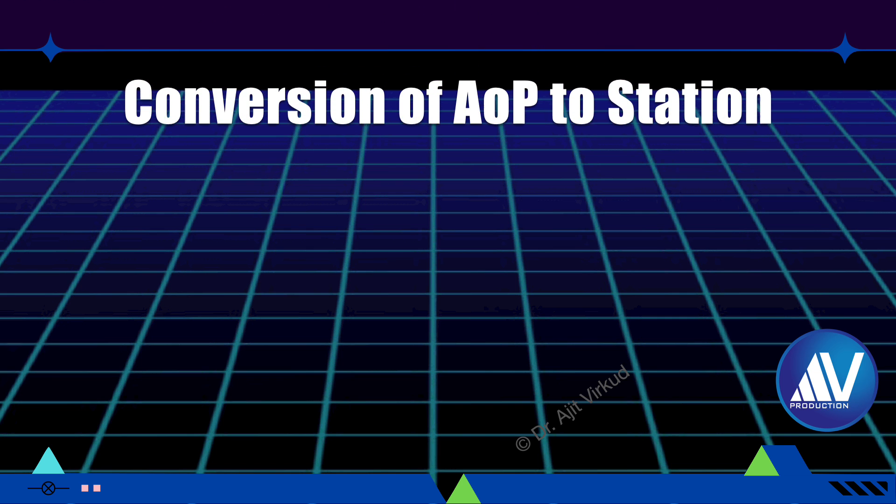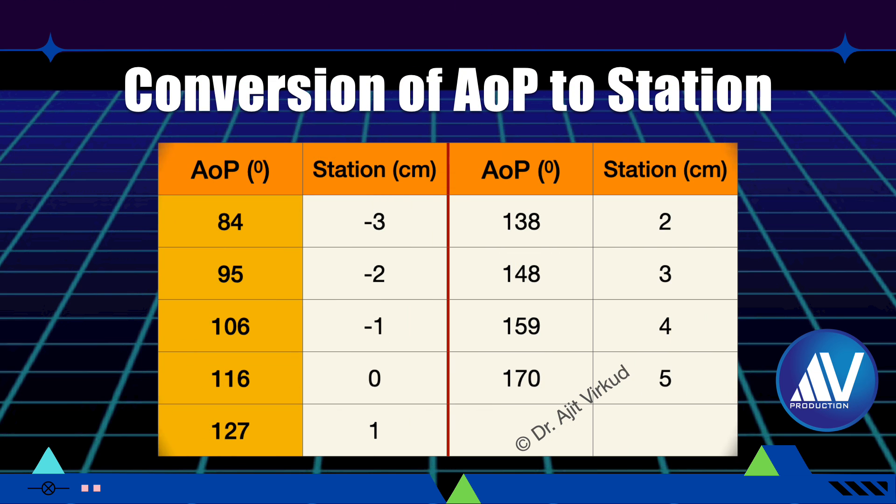There is a linear relationship between angle of progression and station of fetal head, because of which it is possible to convert the findings to actual station. This table gives the conversion of measured angle of progression to actual station in centimeters. As the angle of progression increases, so does the fetal station. An angle of progression exceeding 116 degrees denotes engagement of the head.